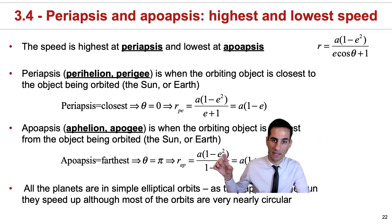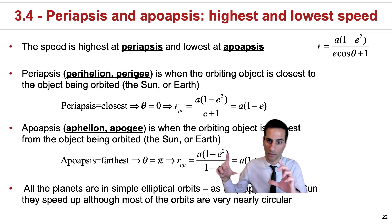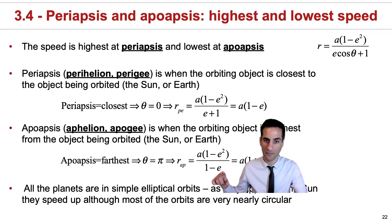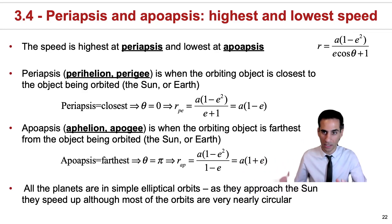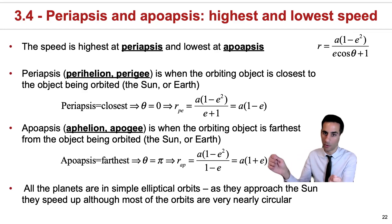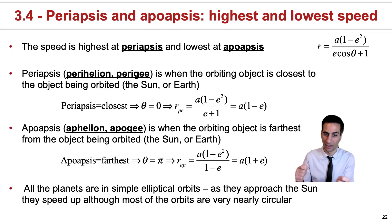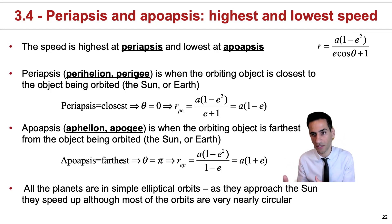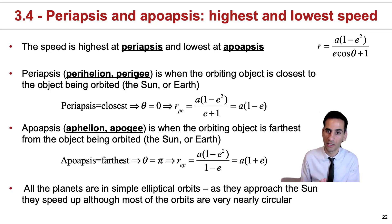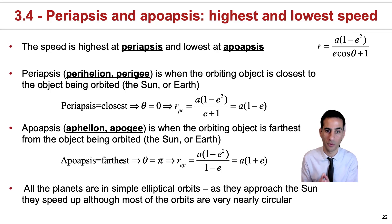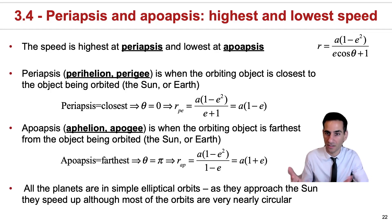That is because you expand this as one minus e times one plus e, and in this case you're canceling the one minus e to get to the final expression. This is very useful, because sometimes you measure these two distances and they allow you to calculate what a and e are. Or if you have an eccentricity and average distance, you can calculate the furthest and closest distance an object will ever be — which is incredibly useful to describe orbits in the solar system, for example.